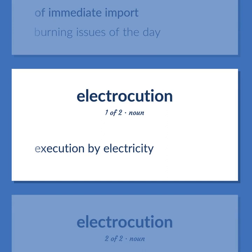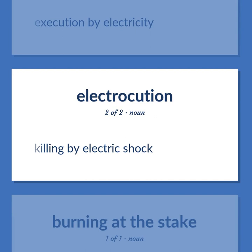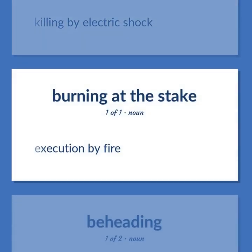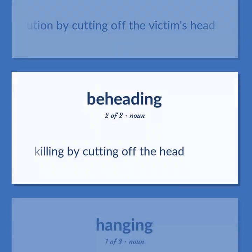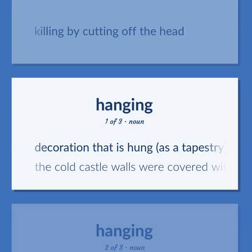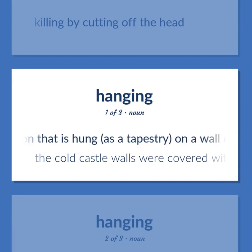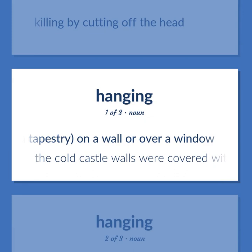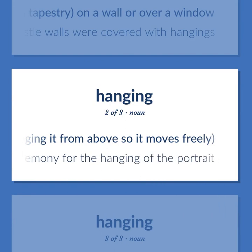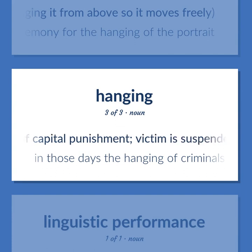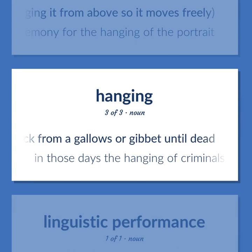Electrocution: Execution by electricity; killing by electric shock. Immolation: Execution by fire. Decapitation: Execution by cutting off the victim's head; killing by cutting off the head. Hanging: Decoration hung on a wall or over a window — the cold castle walls were covered with hangings. The act of suspending something, hanging it from above so it moves freely — there was a small ceremony for the hanging of the portrait. A form of capital punishment where the victim is suspended by the neck from a gallows or gibbet until dead — in those days the hanging of criminals was a public entertainment.